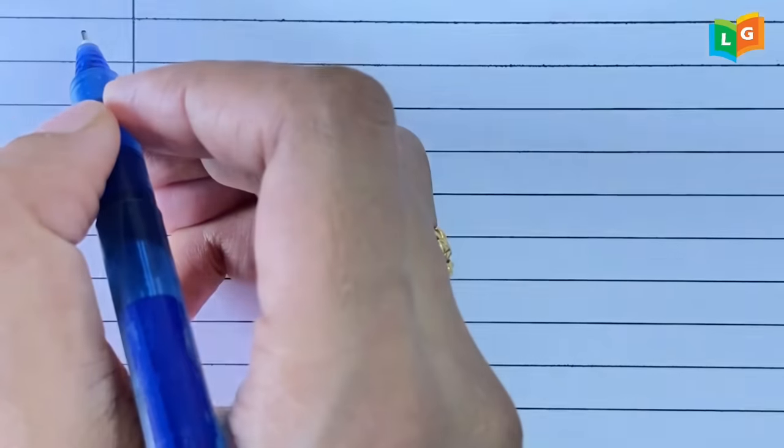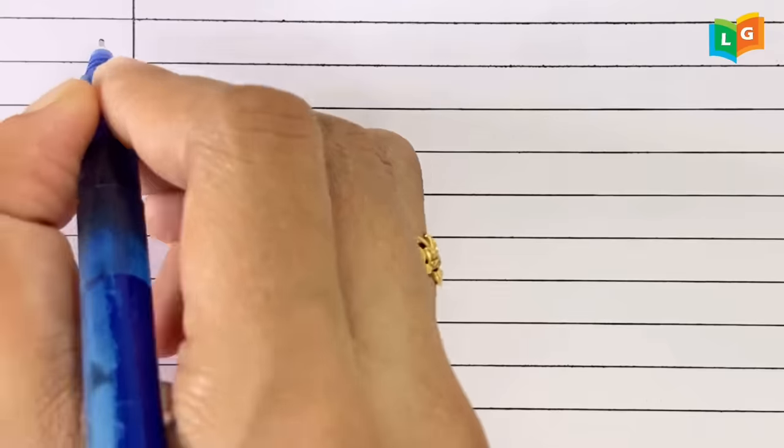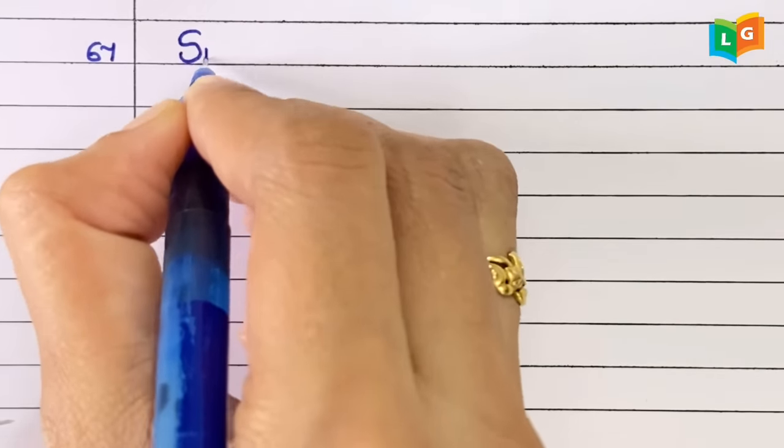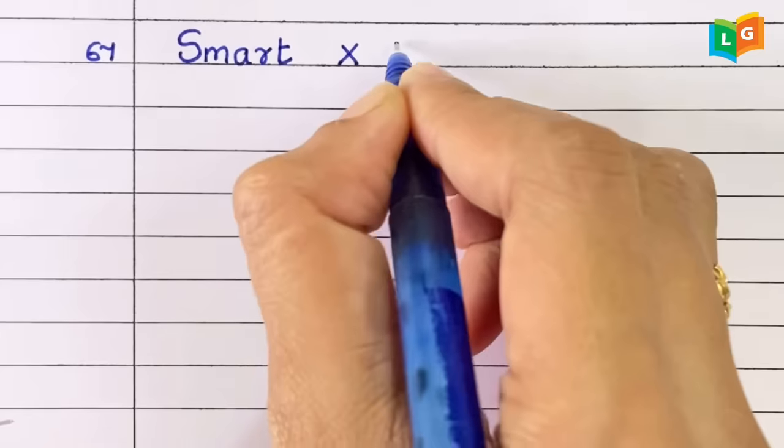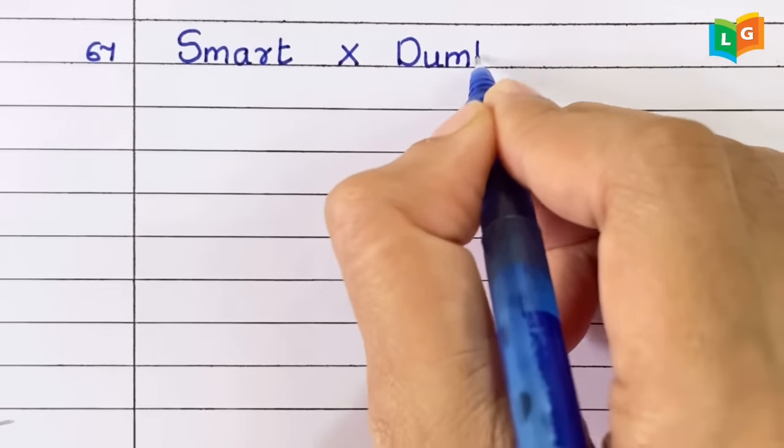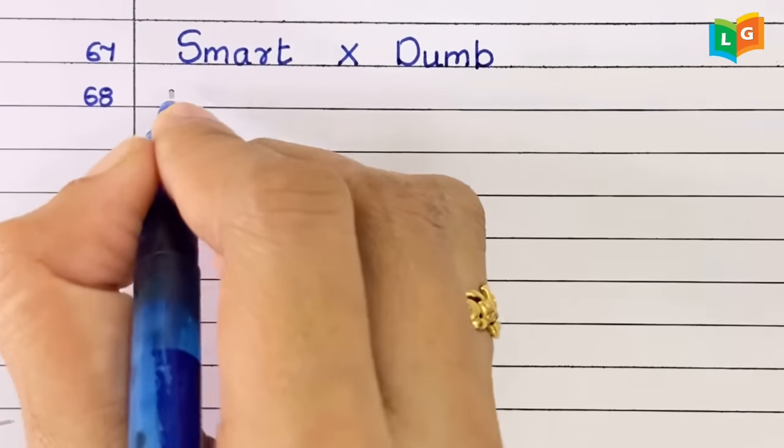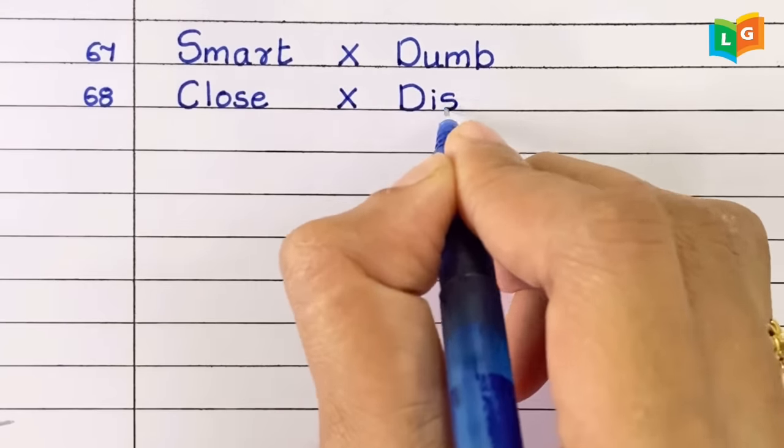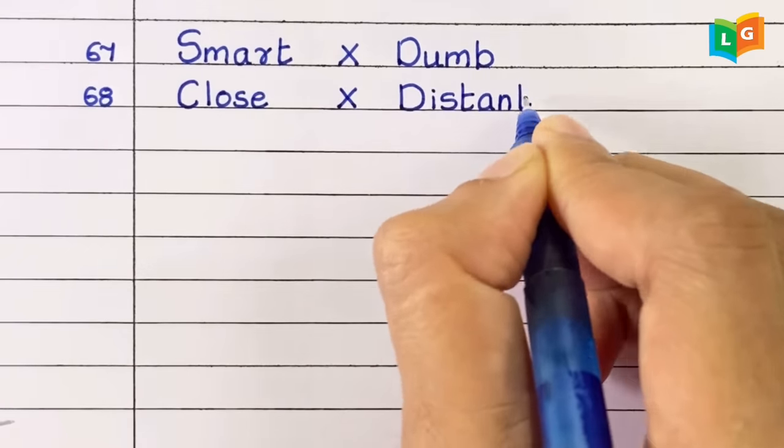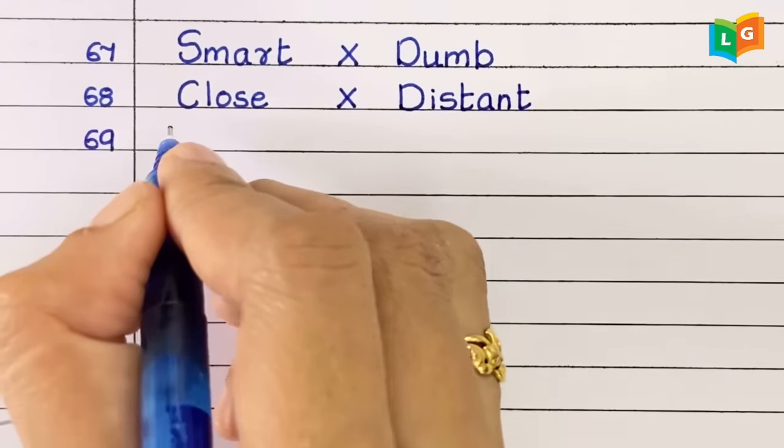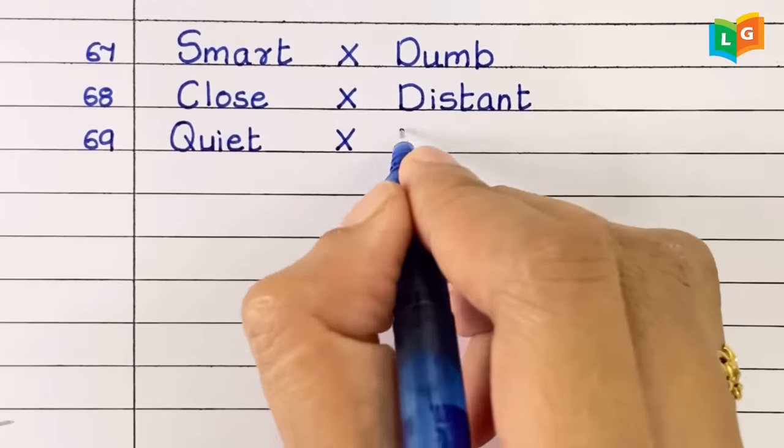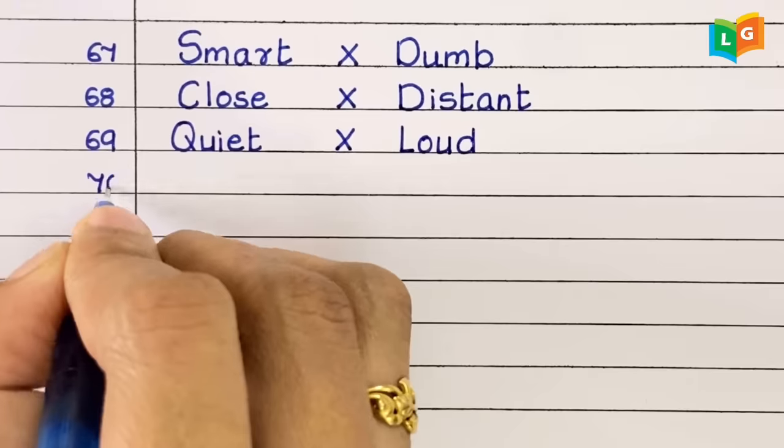Sixty-seven, smart, dumb. Sixty-eight, close, distant. Sixty-nine, quiet, loud.